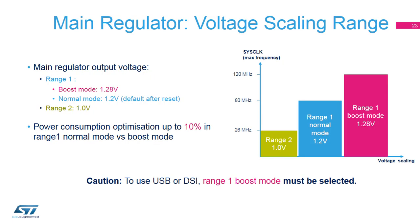The main regulator output voltage can be programmed by software in two power ranges: Range 1 and Range 2. In Range 1, the main regulator operates in two modes selectable by software. Range 1 Normal Mode provides a typical output voltage of 1.2 V, allowing a system clock up to 80 MHz. Range 1 Boost Mode provides a typical output voltage of 1.28 V, allowing a system clock up to 120 MHz. Range 1 Normal Mode optimizes power consumption by up to 10% compared to Boost Mode. When using the USB or DSI peripheral, Range 1 Boost Mode must be selected.